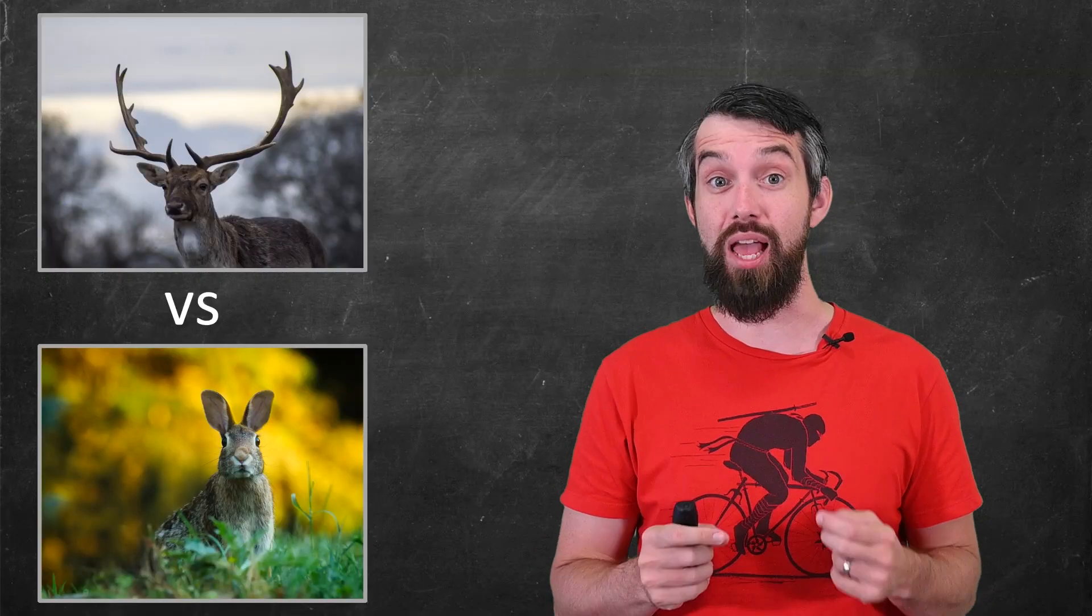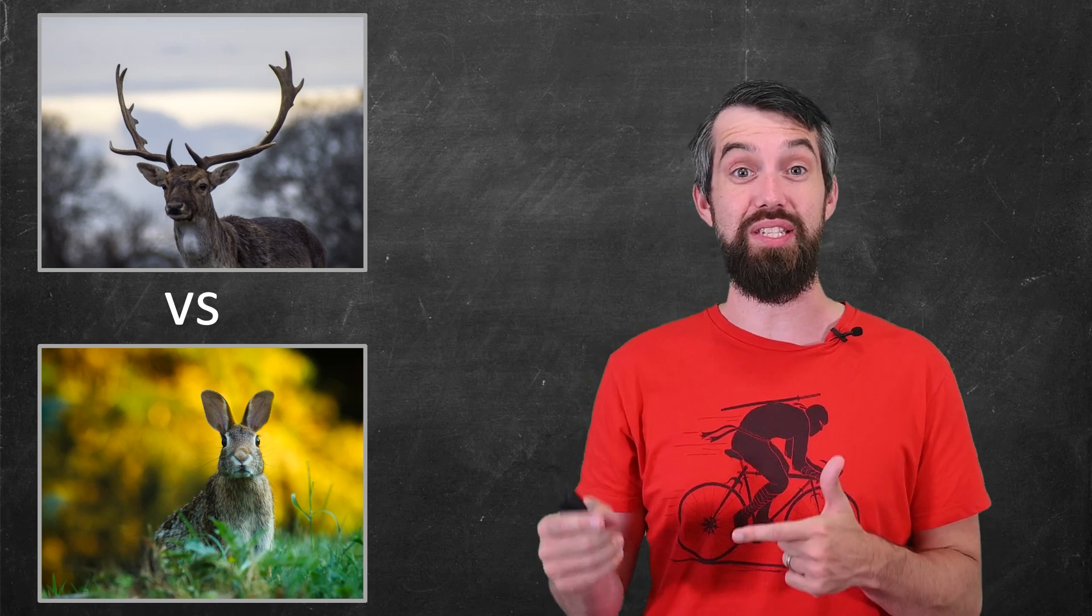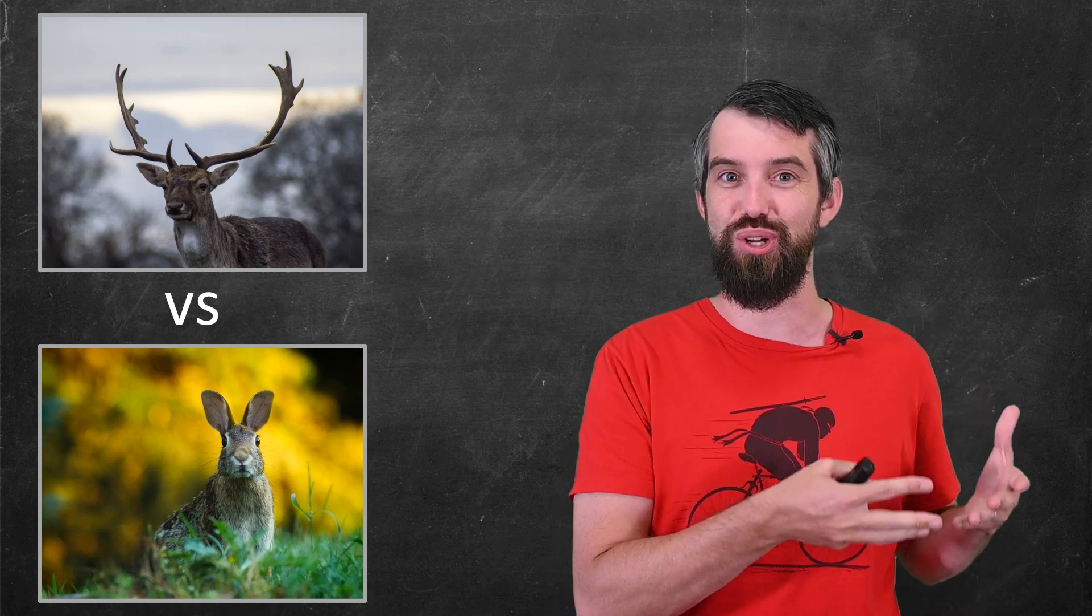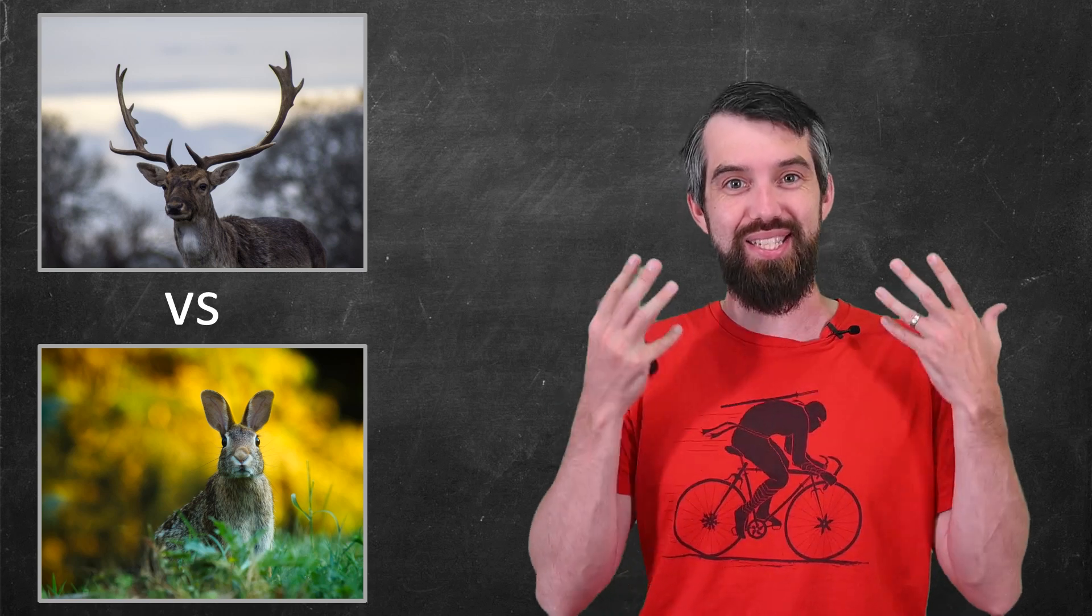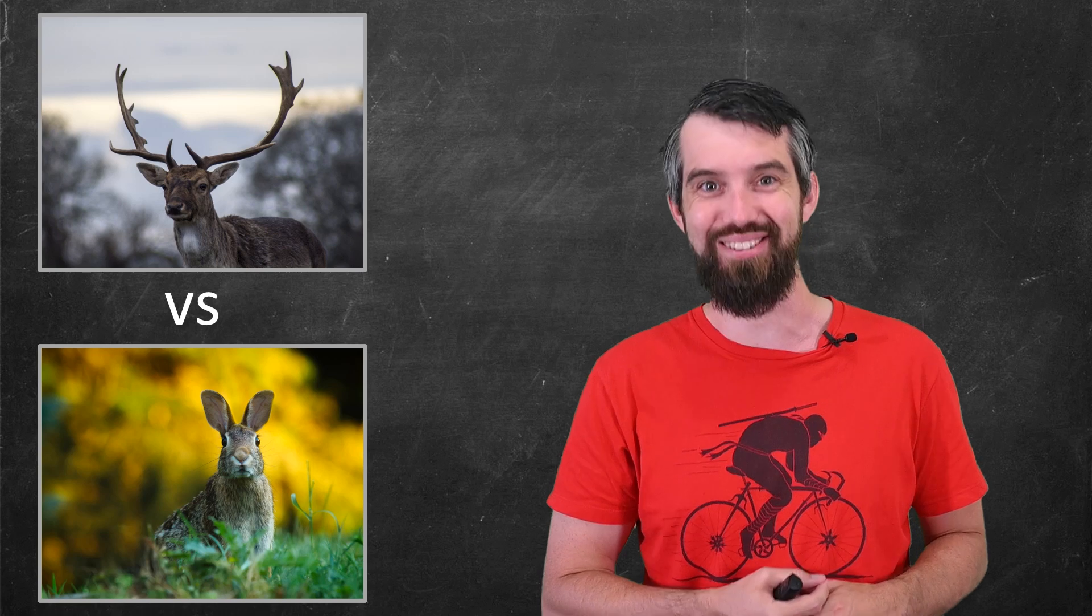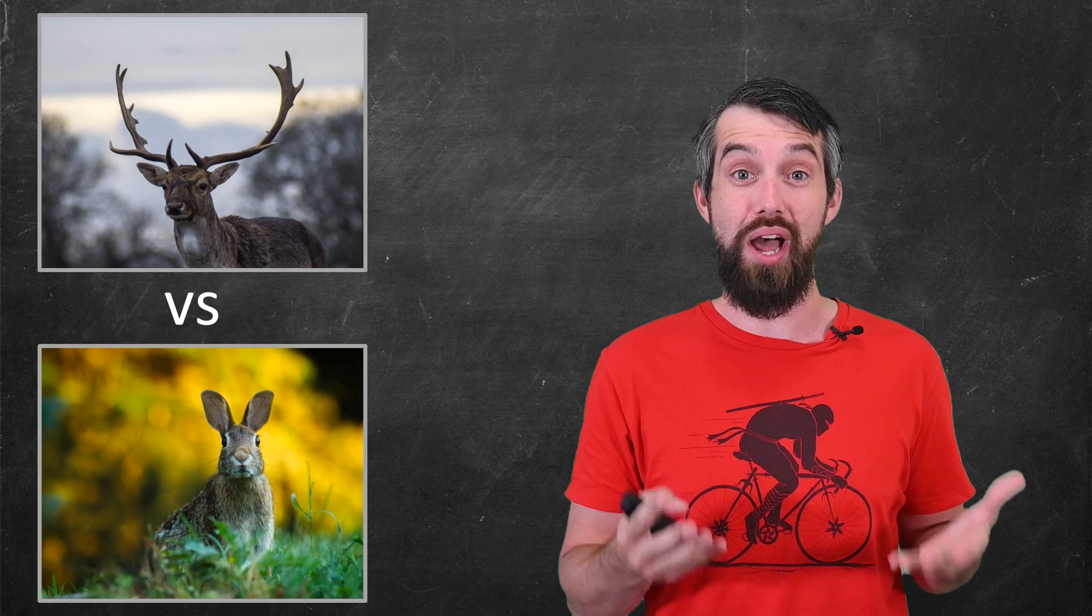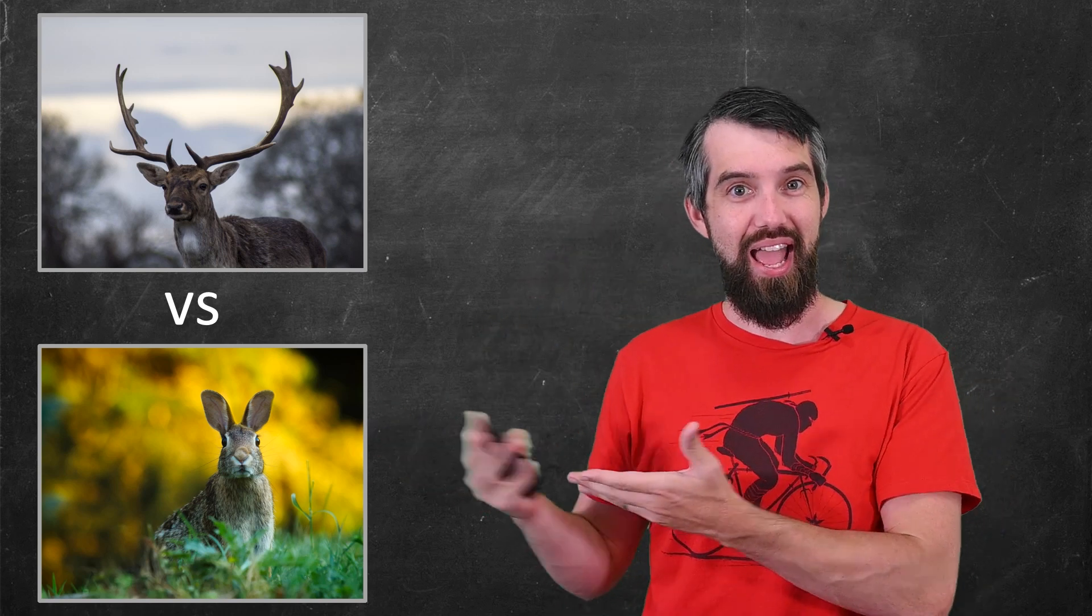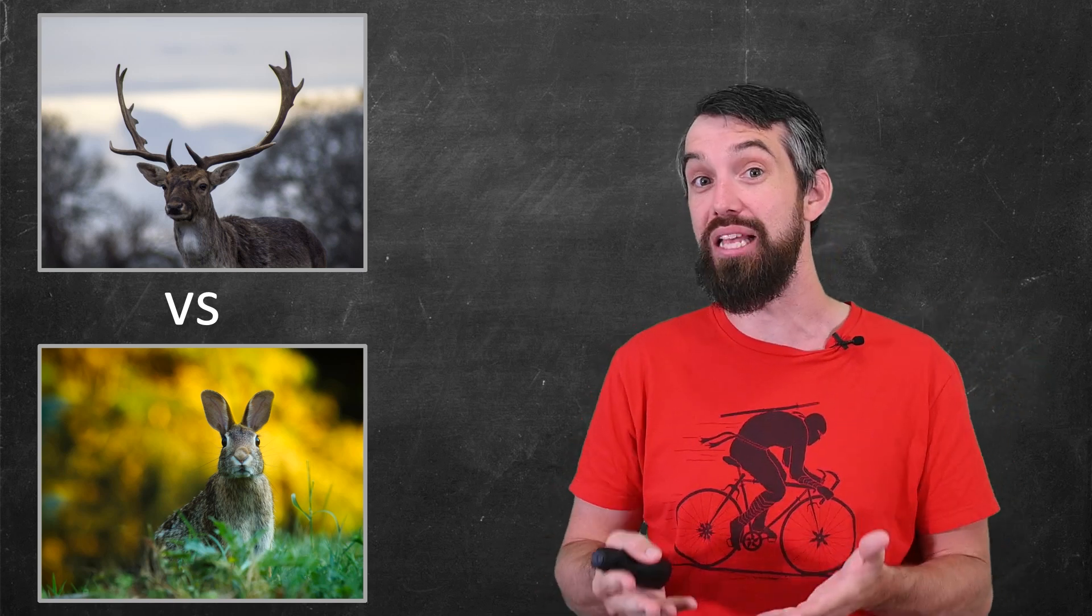Let's begin with a very specific example called the Stag Hunt game. The basic idea of this game applies in many different real-world situations, like technological adoption by companies, international relations, and so forth. But I'm going to present this the standard way it's presented in game theory, which is we're going to pretend we're all hunters. And the idea of this is that you can go hunting for one of two different animals, a stag or a hare. And the other players in the game can go hunting for a stag or a hare as well.